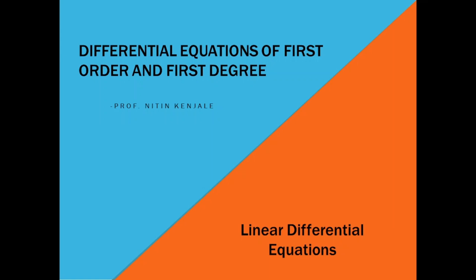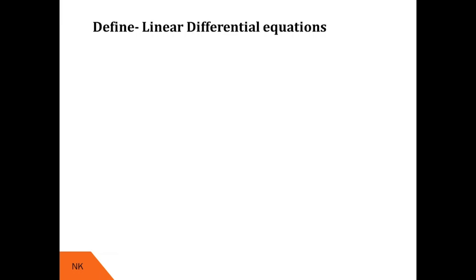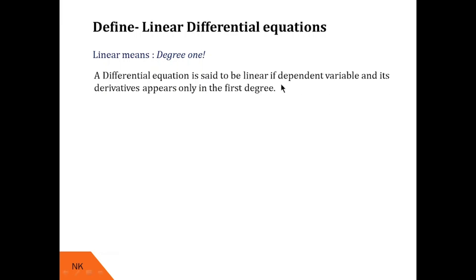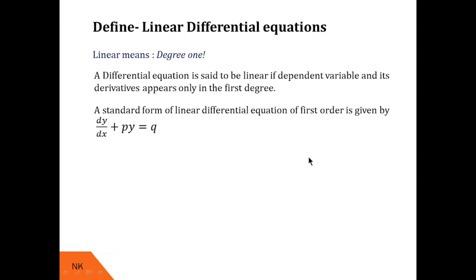Let us see what a linear differential equation is. An equation is linear if its highest degree is 1 — degree 1 equations are called linear equations. In the perspective of differential equations, a differential equation is linear if its dependent variable and its derivatives appear only in the first degree. A standard form of a linear differential equation of first order is generally given by dy/dx + Py = Q. Here y is the dependent variable and dy/dx is its derivative — both appear in degree 1. Therefore this is a linear differential equation. Note that P and Q are either functions of x or constants.